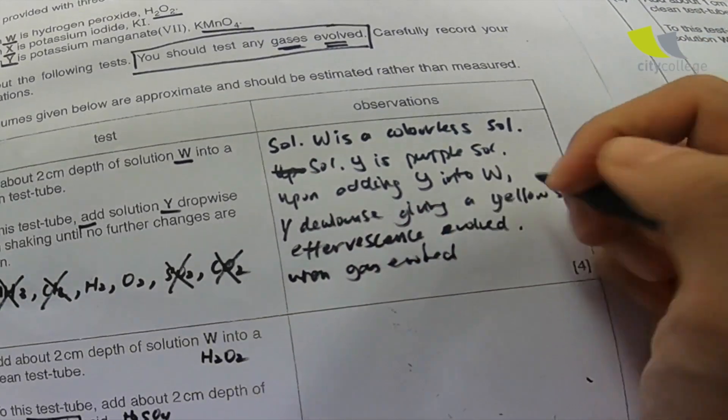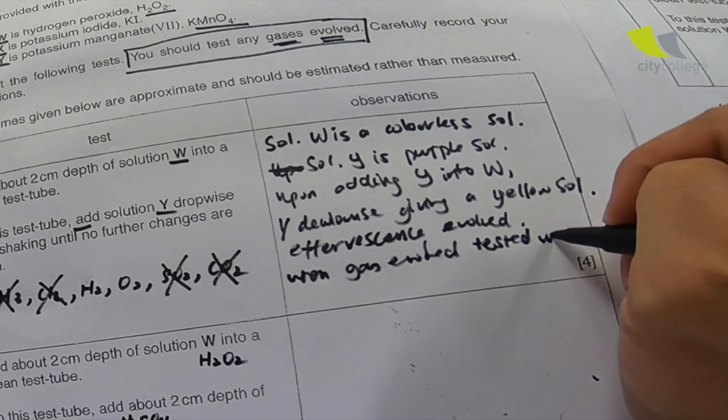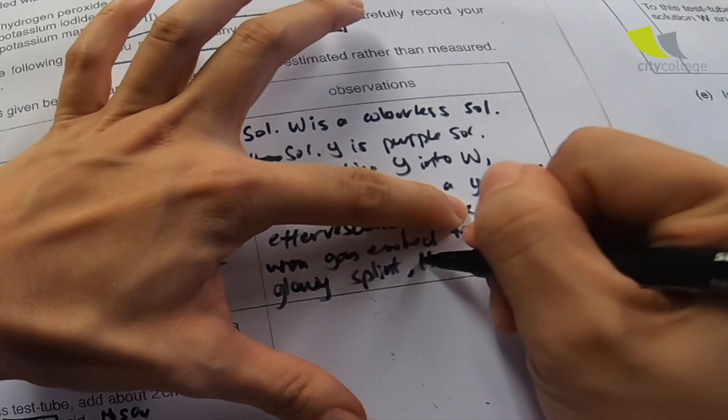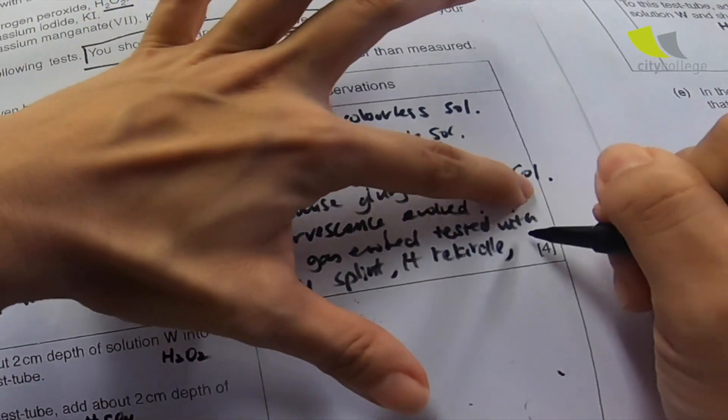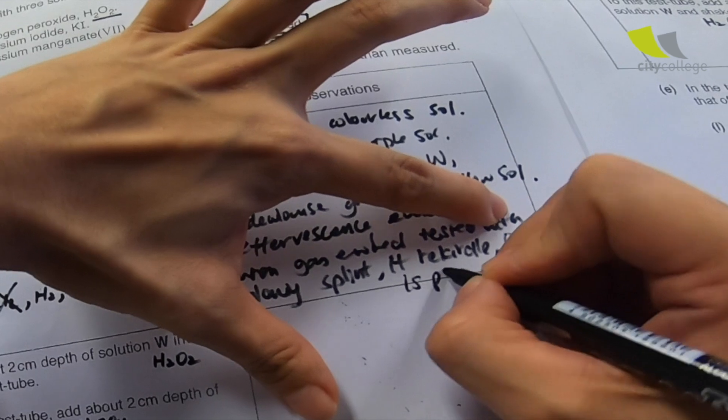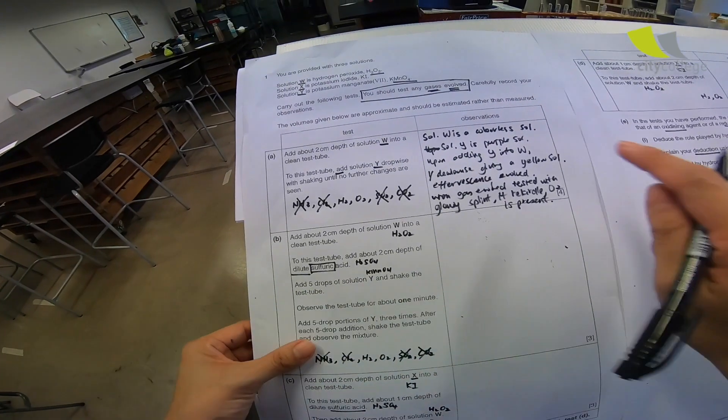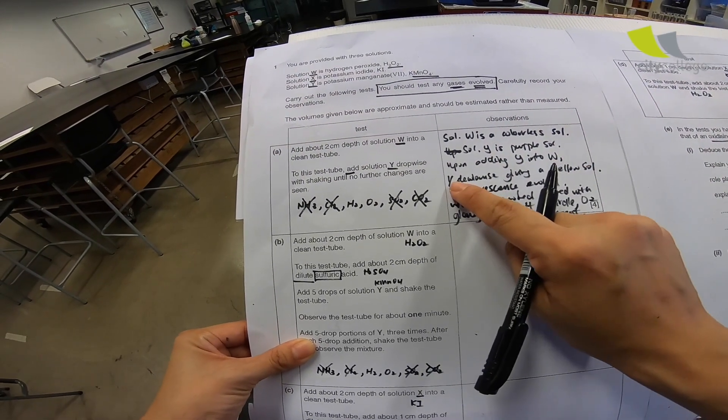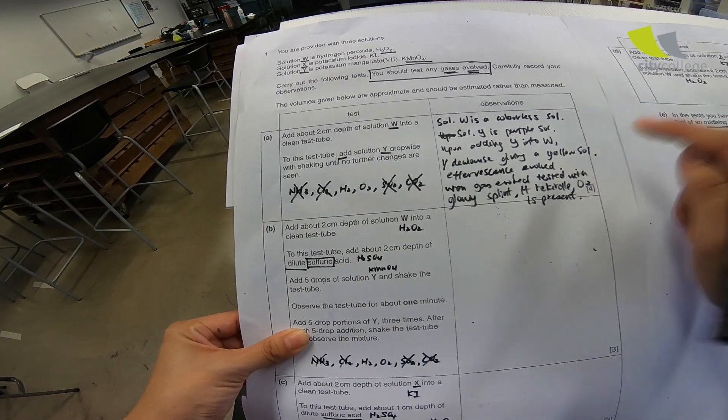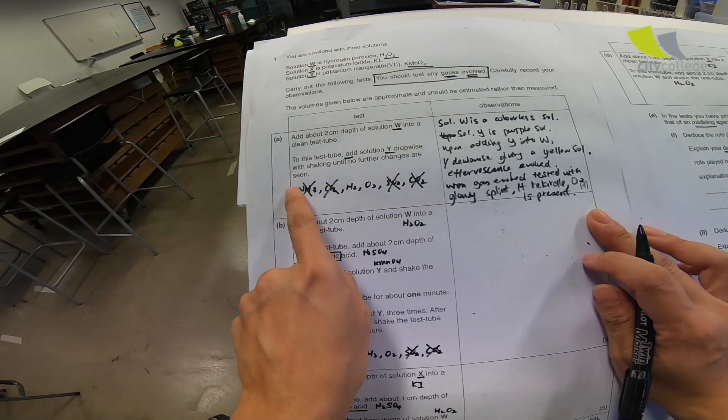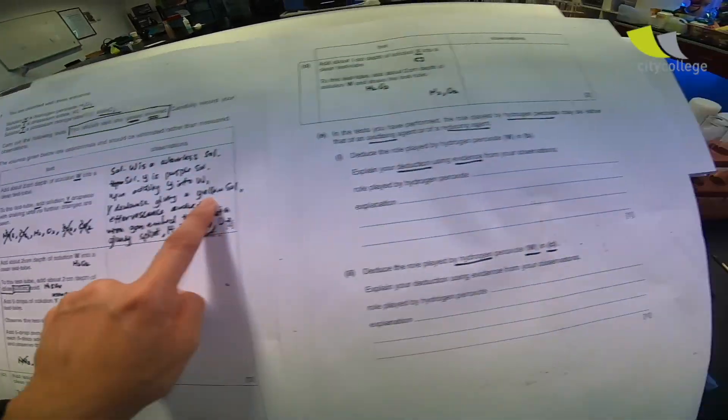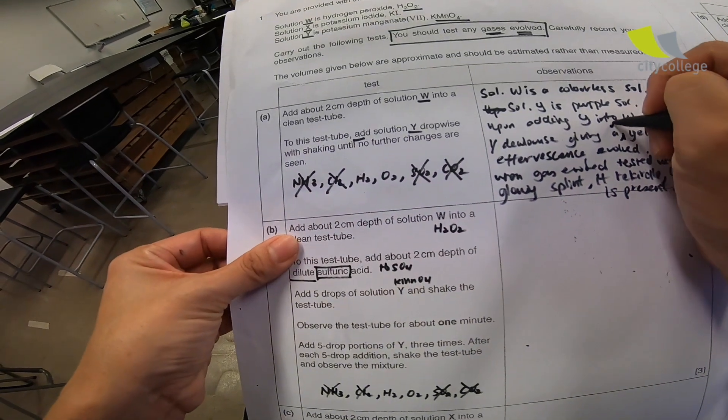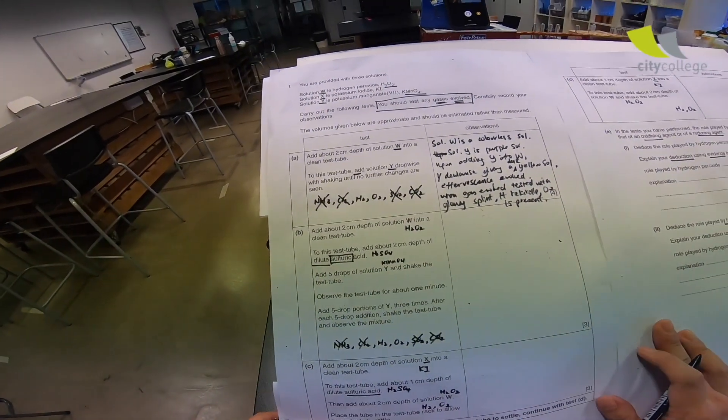And then when gas evolved, you use a lighter splint. A glowing splint tested with glowing splint, it rekindle. O2 is present. Now, remember, solution Y is purple initially upon adding Y into W. You notice that Y decolorized, giving a yellow solution. Now, there's one portion here. I don't feel that it's a yellow solution only because it's a deep yellow solution. I'm going to write down, giving a dark yellow solution. Now I'm satisfied with my answer. Let's move on to the part B now.